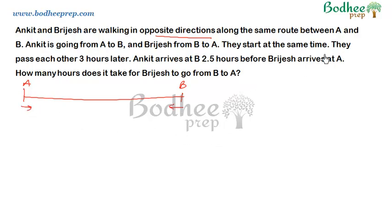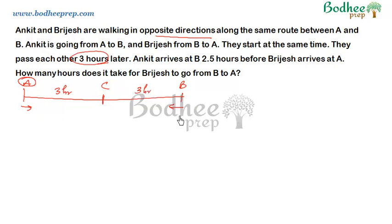They start simultaneously and pass each other at 3 hours. That means the time taken to meet — suppose C is the point where both meet — the time taken by Ankit is 3 hours, and similarly the time taken by Vijayesh to move from B to C is also 3 hours, since they started simultaneously. It further says that Ankit arrives at B 2.5 hours before Vijayesh arrives at A. So suppose after meeting Vijayesh takes time T, then the time taken by Ankit from C to reach B would be T minus 2.5.